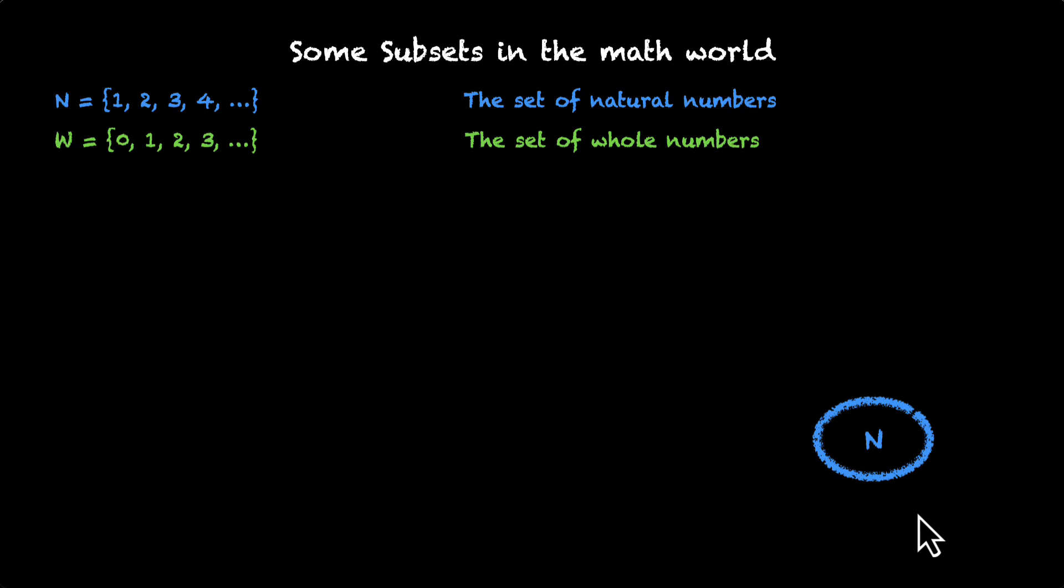So if you want to visualize it, this is how you'll do it. We have w. This contains n and something more. In this case, something more is 0. Let's continue growing our sets.